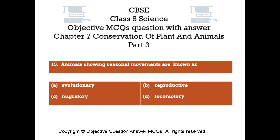Question number 15. Animals showing seasonal movements are known as: Option A - Evolutionary. Option B - Reproductive. Option C - Migratory. Option D - Locomotory.